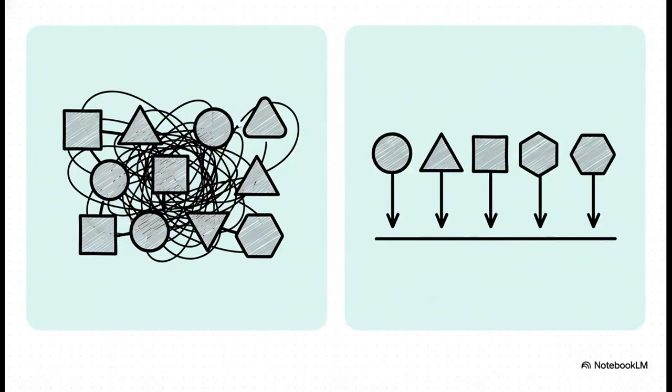This visualizes the whole thing perfectly. Over on the left, you've got what's called high coupling. That's the tangled mess we're talking about, where everything's completely interdependent. But on the right, that's the goal. That's low coupling. Here, the modules are clean, they're independent, and they just talk to each other through these clear, well-defined channels.